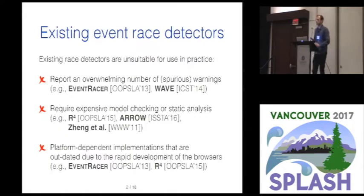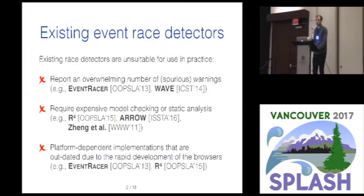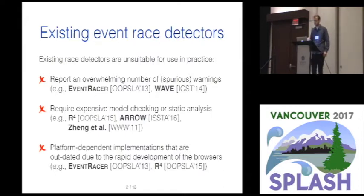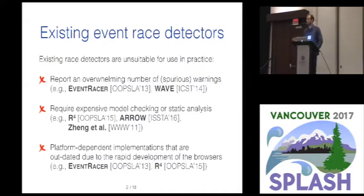There already exists a wide range of powerful event race detectors for JavaScript web applications. Unfortunately, these are unsuitable for use in practice for a number of reasons. Some tools tend to report an overwhelming number of warnings, most of which are spurious. Some either require expensive model checking or static analysis, which is notoriously difficult for JavaScript web applications. And others are platform dependent in the sense that they require modifying the underlying browsers, which means they rapidly become outdated.